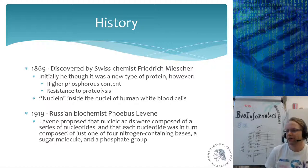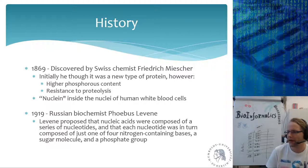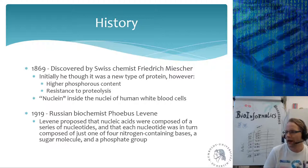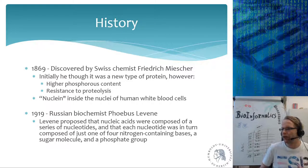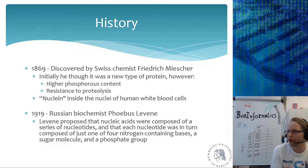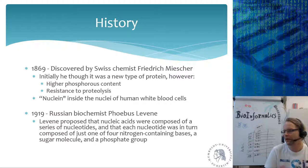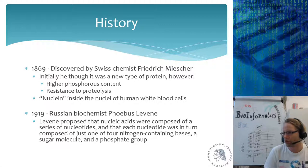In 1869, Swiss chemist Friedrich Miescher made a discovery. He initially thought he had found a new type of protein. However, when he did measurements on this extract from cells, he found it had a relatively high phosphorus content and was resistant to proteolysis — enzymes could break down proteins, but this new substance could not be cut into smaller pieces. He coined the term 'nuclein,' which he discovered inside the nuclei of human white blood cells.